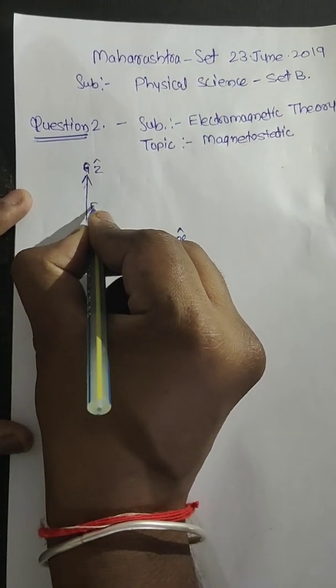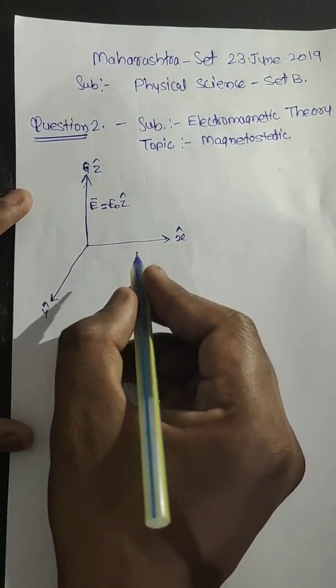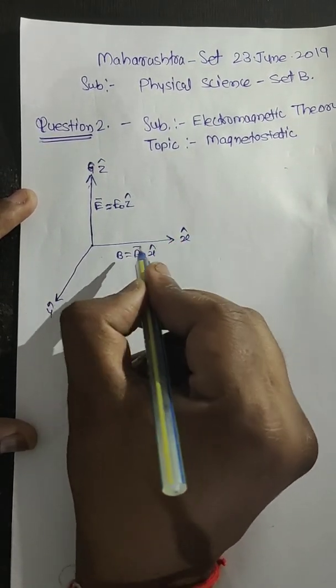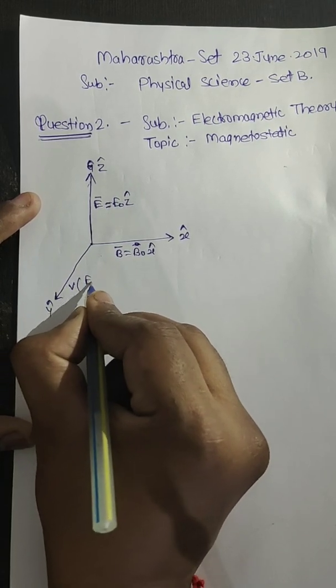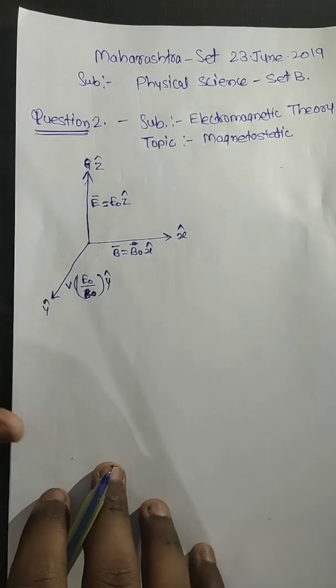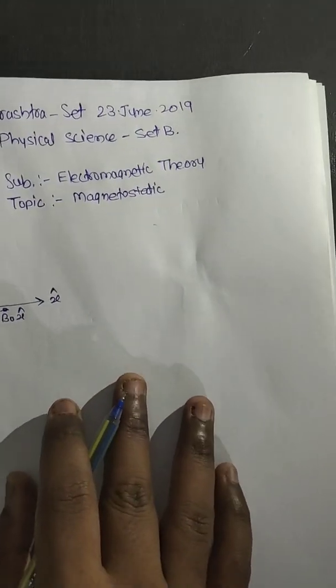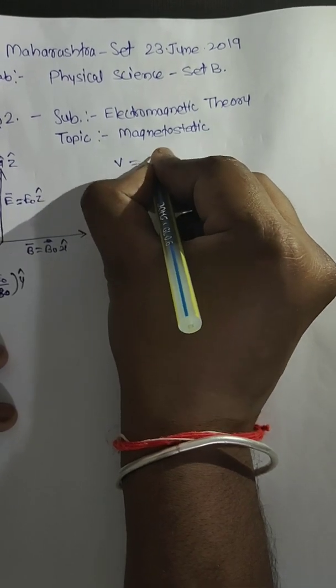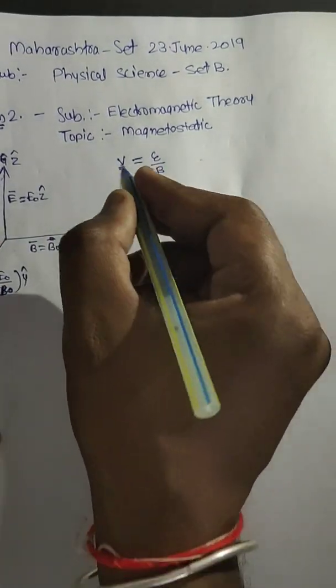Suppose electric field and velocity v is E₀ upon B₀ in y cap direction. So we know that velocity v is equal to E upon B. The speed of motion is denoted by v.